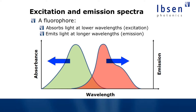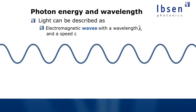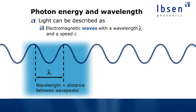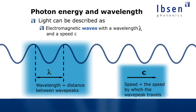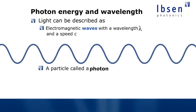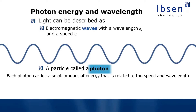To understand how the molecule exchanges energy with light, we can look at electromagnetic waves. Light can be described as electromagnetic waves with a certain wavelength — the distance between two wave tops — traveling at the speed of light. But you can also describe light as particles called photons, where each photon carries a small amount of energy given by Planck's formula: E = hc/λ, where h is Planck's constant, c is the speed of light, and λ is the wavelength.